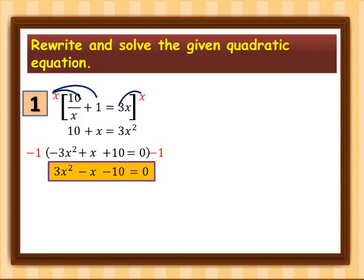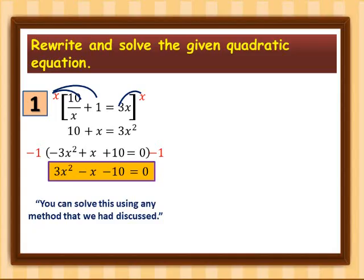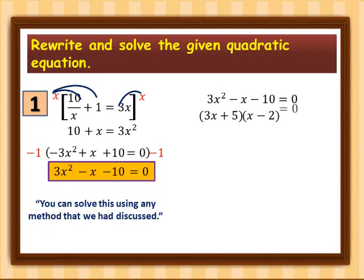This is now the equation we will use. You can solve this using any method we have discussed. For this example, I will be using the factoring method. The factors of 3x squared minus x minus 10 are (3x + 5) and (x − 2) equal to 0. Equating each factor to 0: 3x + 5 = 0 and x − 2 = 0.